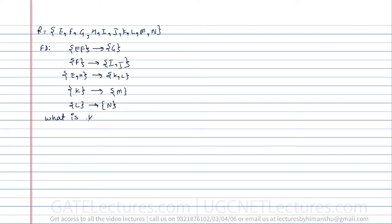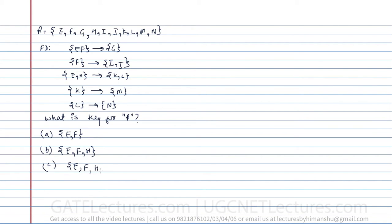They are asking what is the key for relation R. Option A is EF, option B is EFH, option C is EFHKL, and option D is E only. We can take each option and find closures, but there's a shortcut for identifying the key.